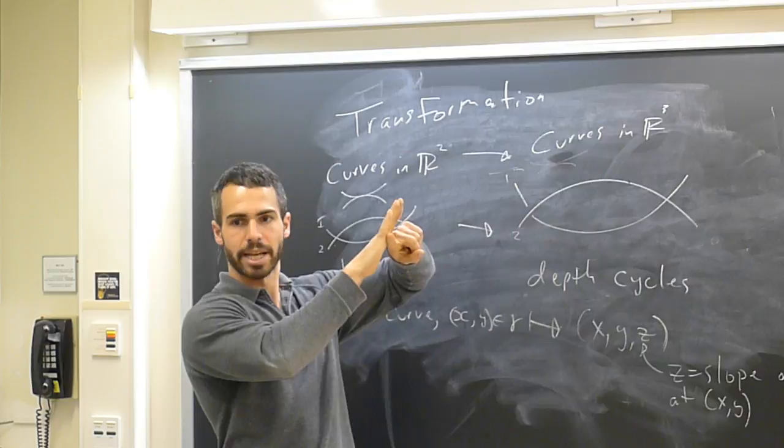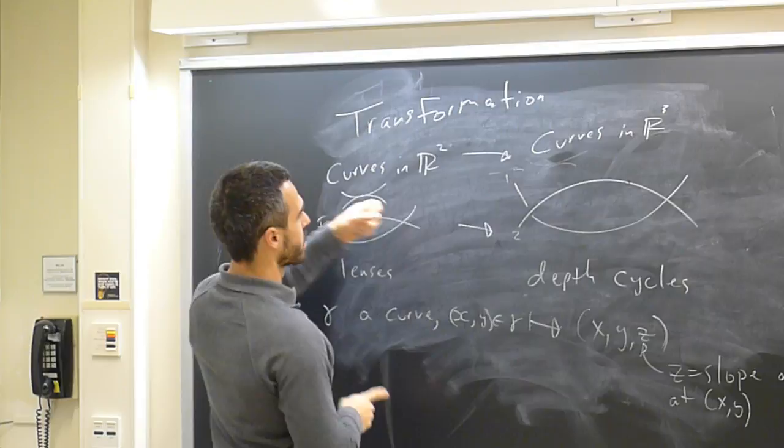So each curve has its own tangent direction. And so at their intersection place, that spans some tangent plane. And that tangent plane always contains the z direction. If you have a lens, that always happens.